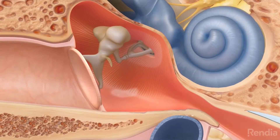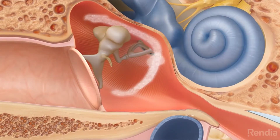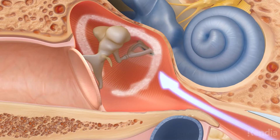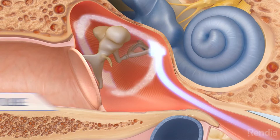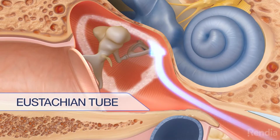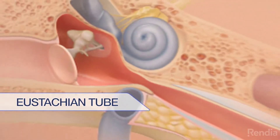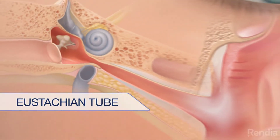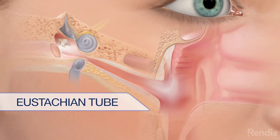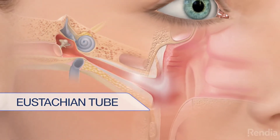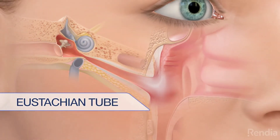The middle ear is normally filled with air, which enters through the eustachian tube. The eustachian tube is a narrow channel that runs from the middle ear to the back of the nose and throat.